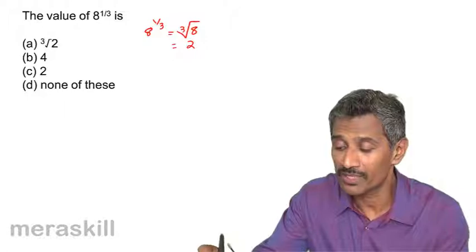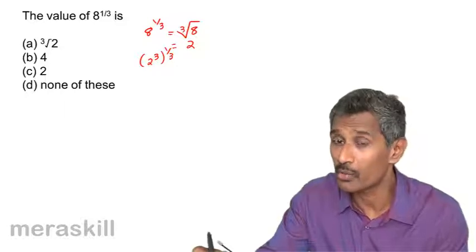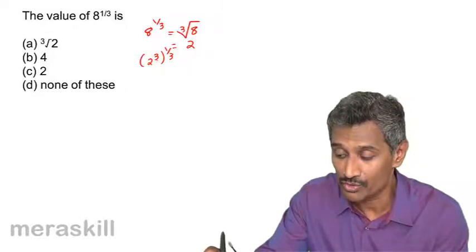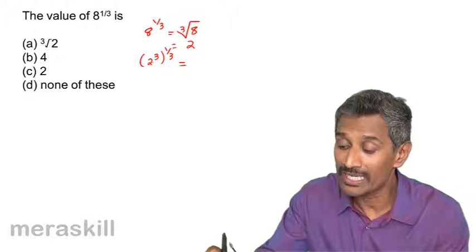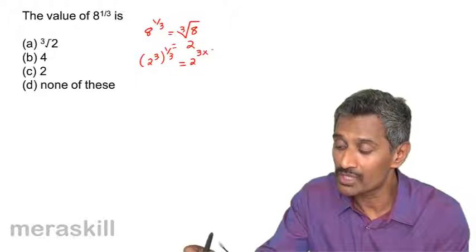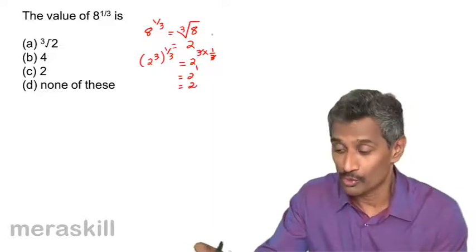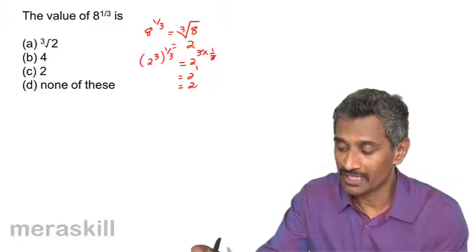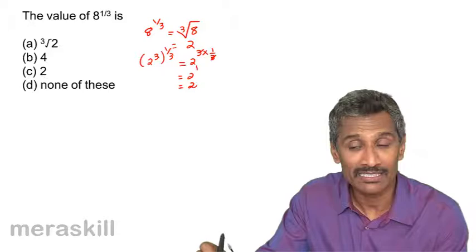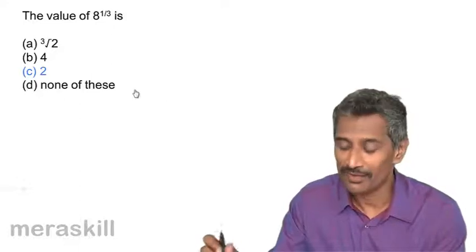There is a more interesting way of doing it. 8 can be written as 2 cubed, the whole raised to 1 by 3. We are using the power of power rule: a raised to m, the whole raised to n, is a raised to m×n. So it's 2 raised to 3 × (1 by 3), which is 2 raised to 1, also equal to 2. Whether you use the root rule or the power of power rule, you get the answer as 2.